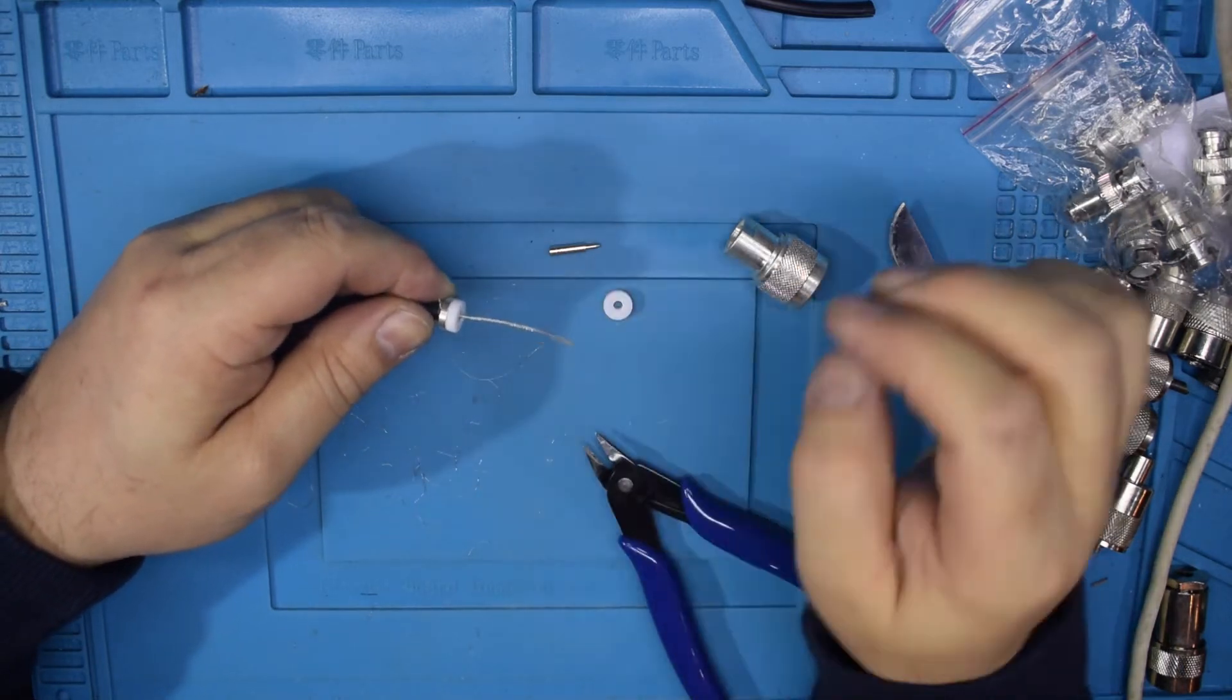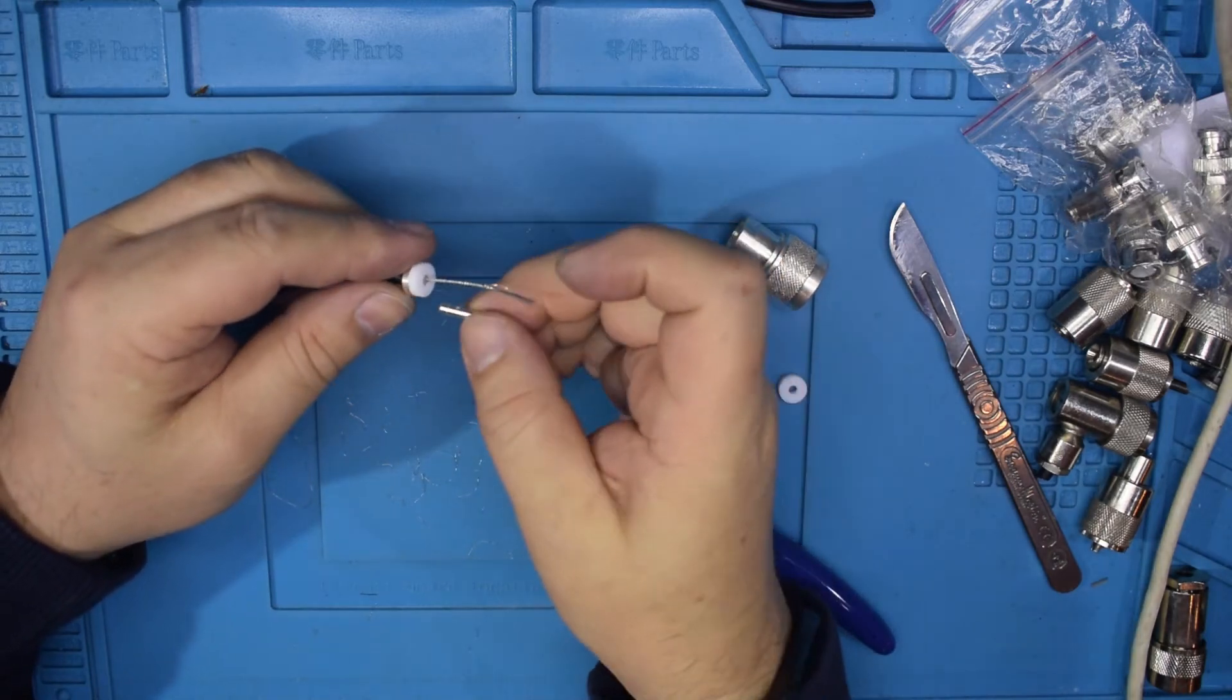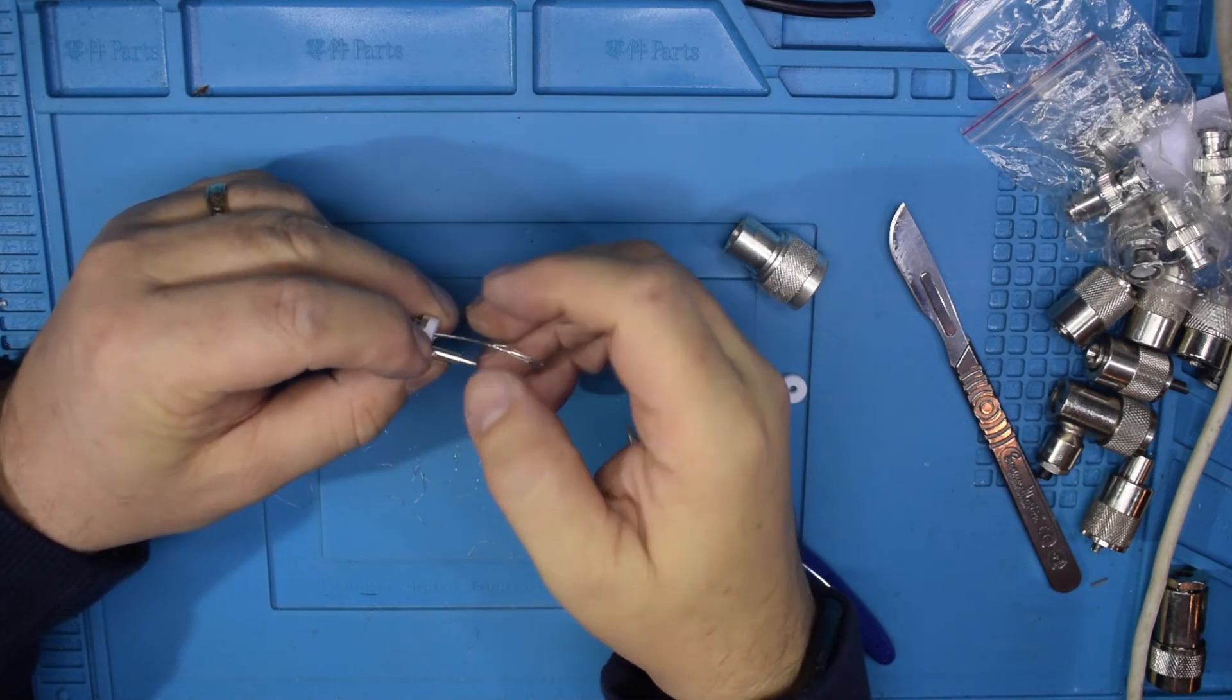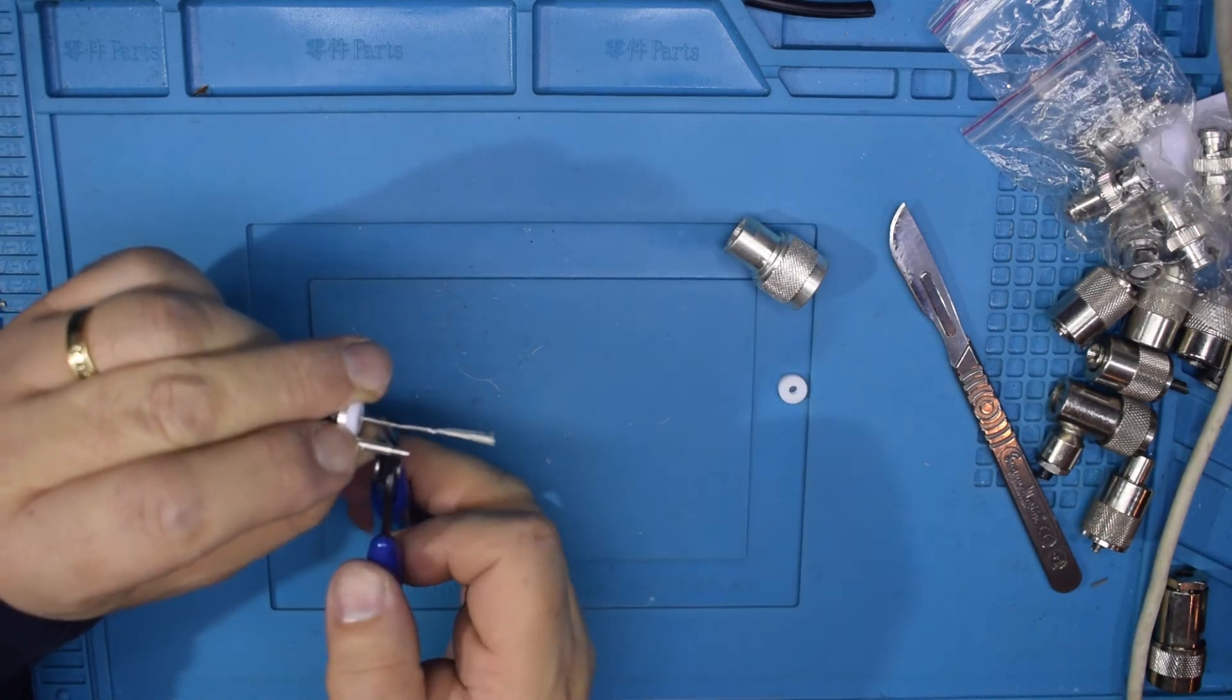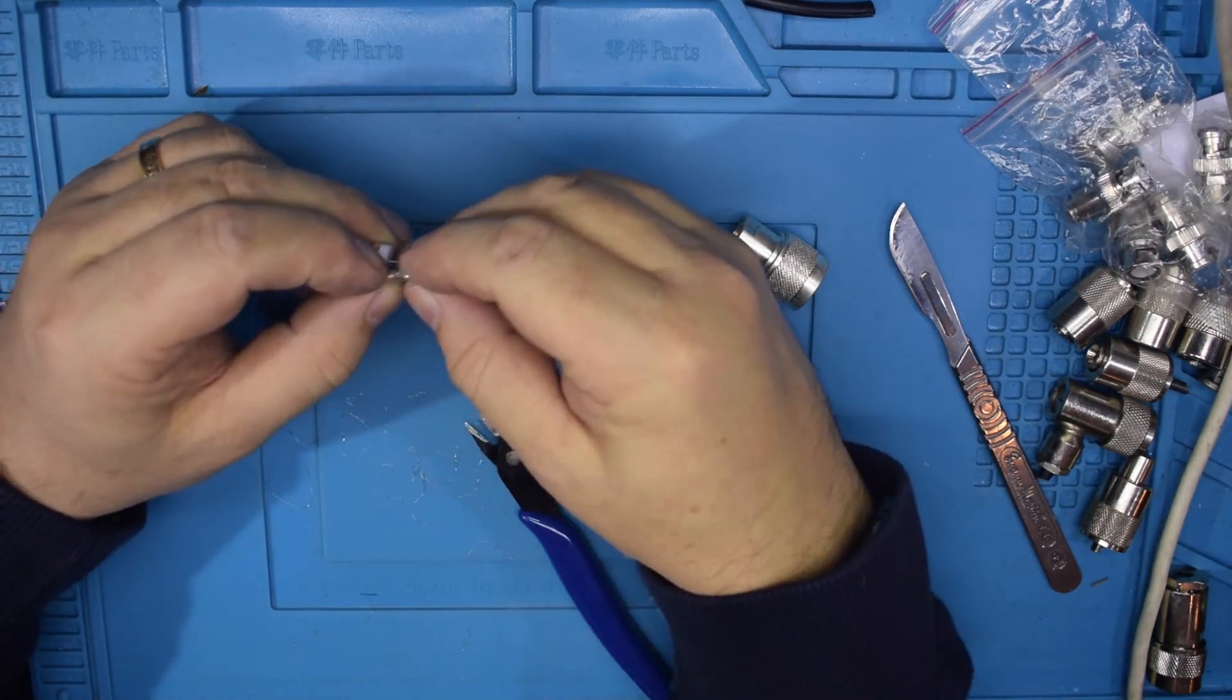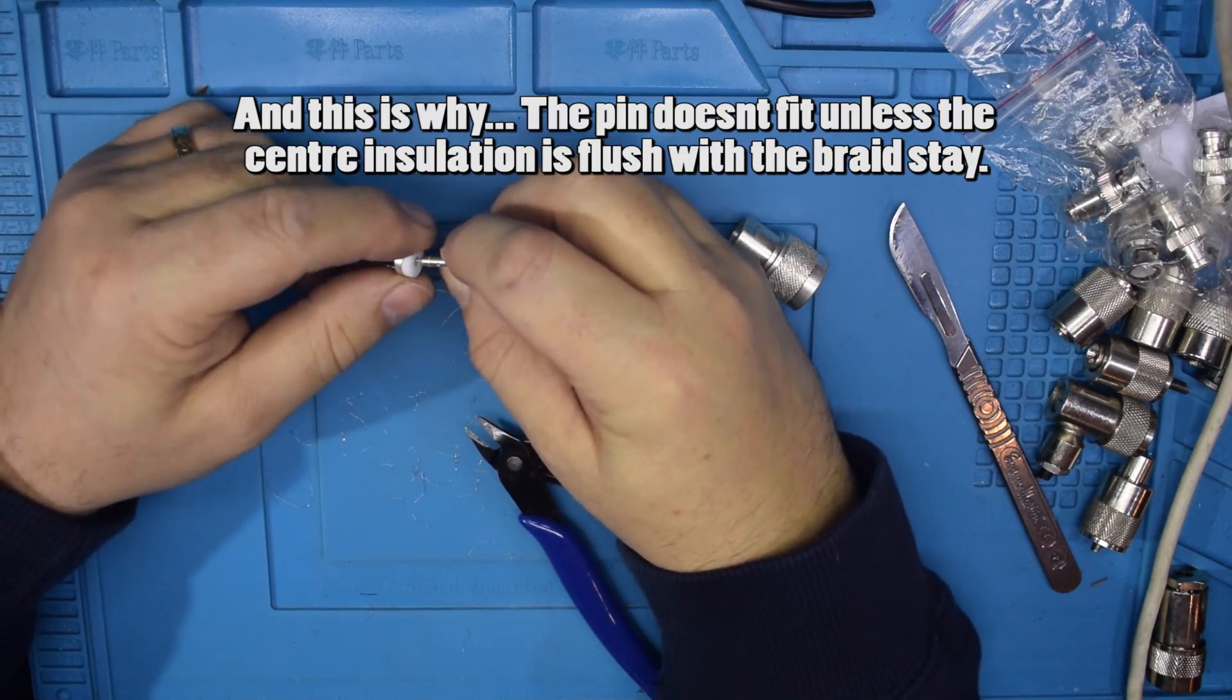Now you're left with quite a long piece here. Now what you actually need to do is you need to measure how deep your pin is. So if your pin goes in to this line here and sits on the flat, the total length you want going inside the pin is around about there. So you cut the rest of that off.